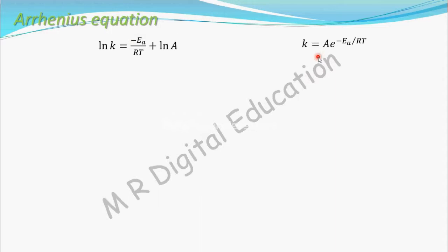If you want, please watch that one. Now, at a temperature T1, take a rate constant as k1. Then this equation becomes logarithm of k1 equal to minus Ea by RT1 plus ln A, and call this equation as 1.